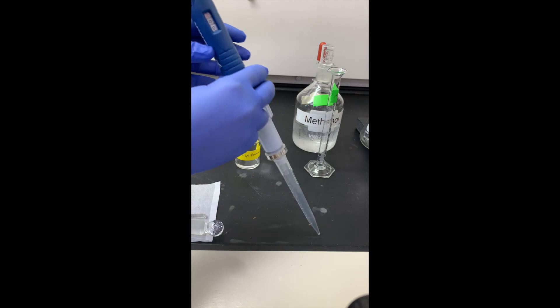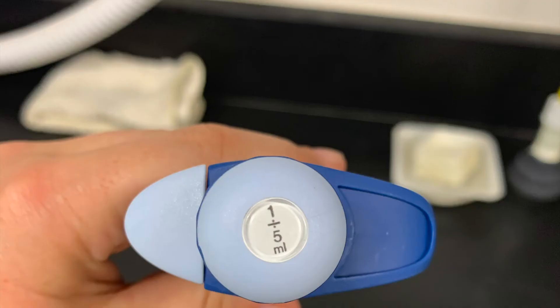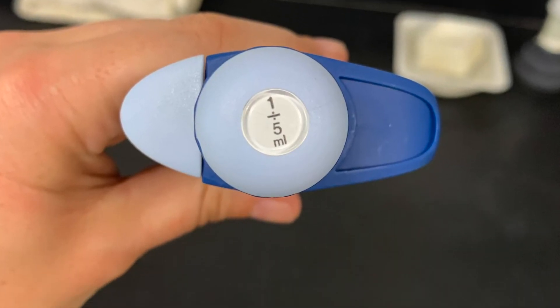Here I show you that I have my micropipettor set to 2 milliliters and that I am using a 1 to 5 milliliter micropipet.